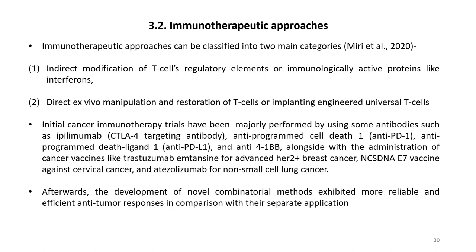Initial cancer immunotherapy trials were majorly performed using antibodies such as ipilimumab (a CTLA-4 targeting antibody), anti-PD-1, anti-PD-L1, and anti-4-1BB, alongside cancer vaccines like trastuzumab-emtansine for advanced HER2+ breast cancer, NCS-DNA E7 vaccine against cervical cancer, and atezolizumab for non-small cell lung cancer. Afterwards, the development of novel combinatorial methods exhibited more reliable and efficient anti-tumor responses in comparison with their separate applications. We will continue this discussion in part B of this lecture.